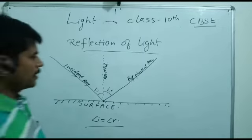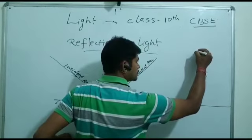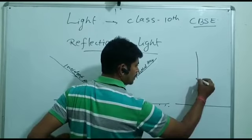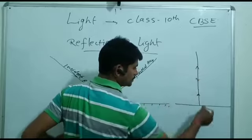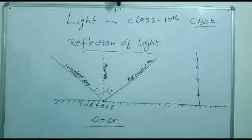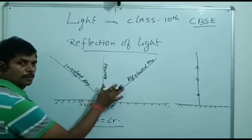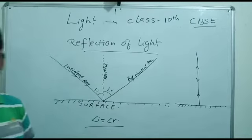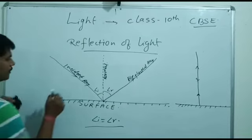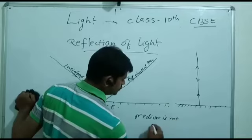If light is coming perpendicular to the surface, it reflects back in the same direction. Whatever angle you use, the same equal angle will be formed by the reflected ray. One important thing: in reflection, the medium is not changed.